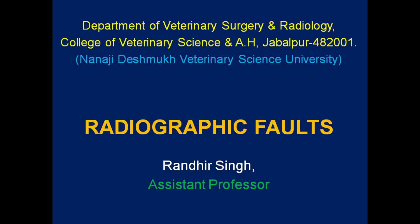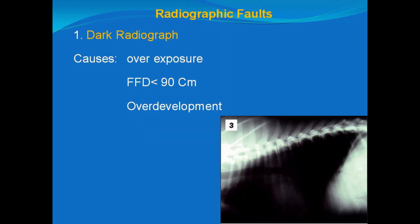Good morning friends. I will discuss the problem of dark radiograph. We get a dark radiograph due to three or four common reasons. Sometimes our exposure factors are quite high — we may be using high kVp, higher mA, or simply more exposure time. The second reason is our FFD may be less than 90 centimeters. The third reason is we may be over-developing the film, meaning we are keeping the film in developer for a long time, or our solutions may be at a higher temperature than normal.